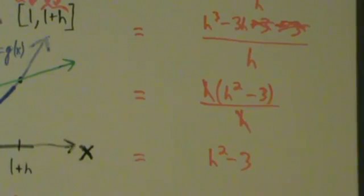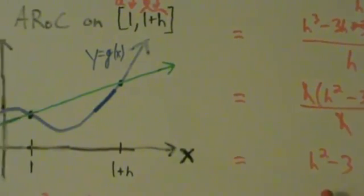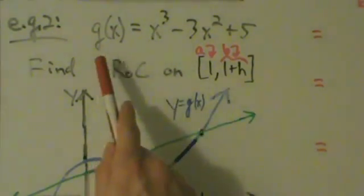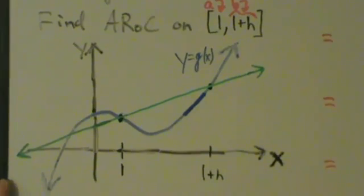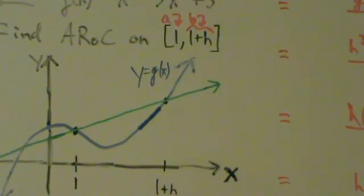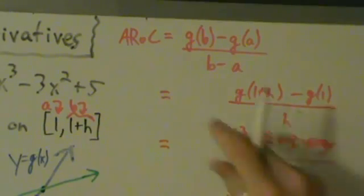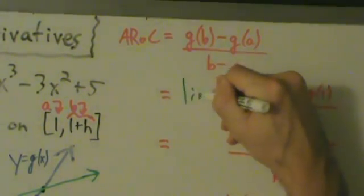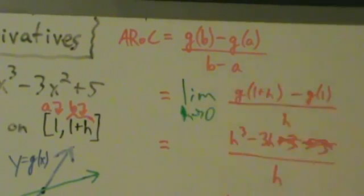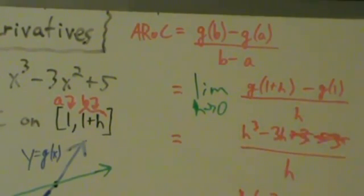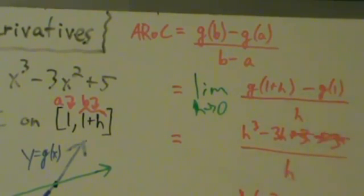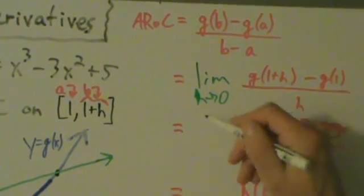So what's the significance of that? H squared minus 3 is the average rate of change of g of x on the interval from 1 to 1 plus h, and it equals the slope of the secant line. But what's the significance of h here? Let's see what happens if we take a limit as h goes to 0. If we try to do that right at the start, we just end up with g of 1 minus g of 1, which is 0 over 0, so we can't do direct substitution right away. Let's carry this limit down.